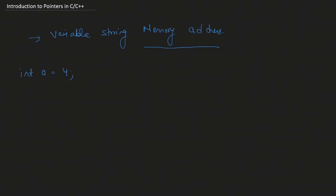The location at which a variable is stored — suppose I declare a variable int a = 4 — the location where this variable a will be stored is what we want to capture, and we capture it through a pointer. Declaring a pointer is easy: we use the asterisk sign. Right now this pointer does not have any memory location, so it's holding a garbage value. To give it a value we do ptr = &a, which stores the address of a into the variable ptr.